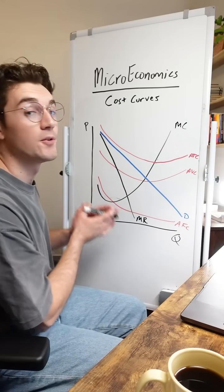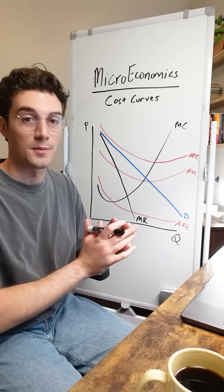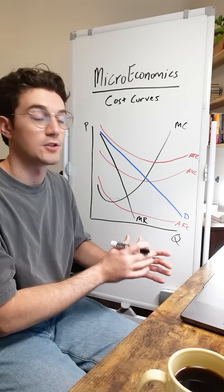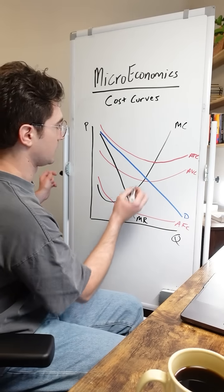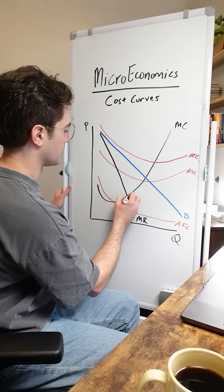All right. But with that being said, let's first start by understanding that every firm type, no matter if it's monopolistic or perfect competition, is going to produce at the MR equals MC point. So that's going to be the intersection of these black curves right here.